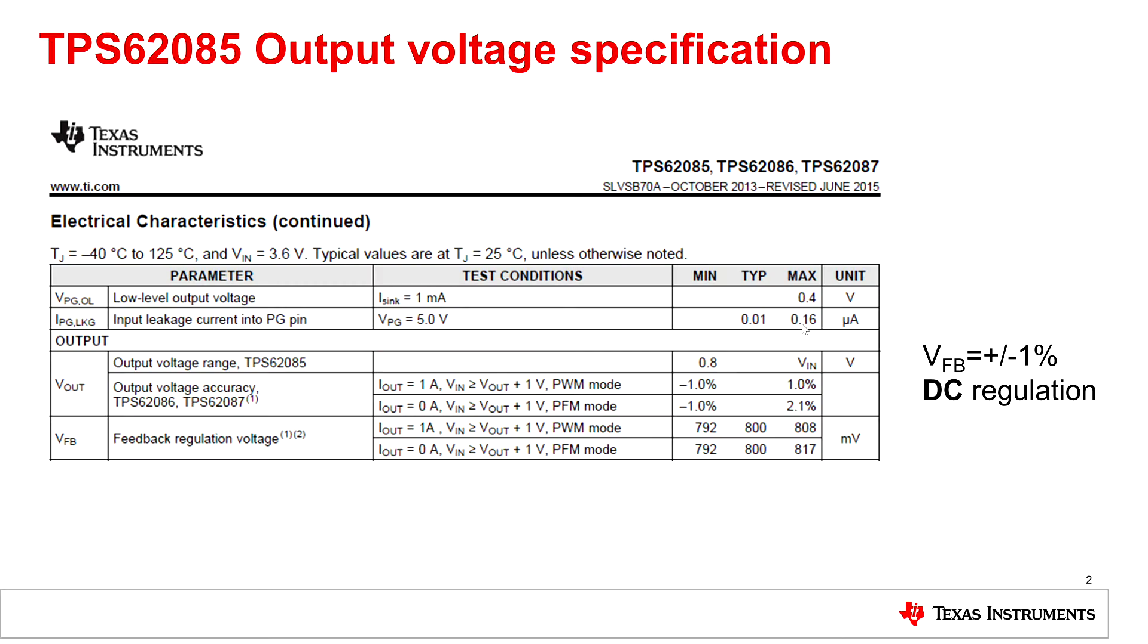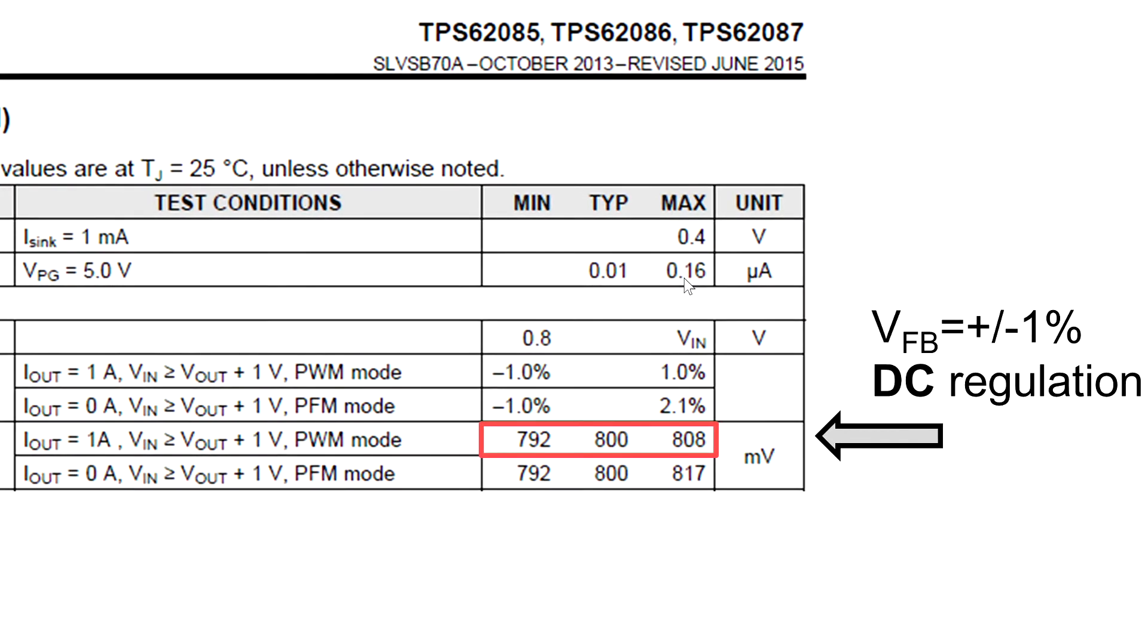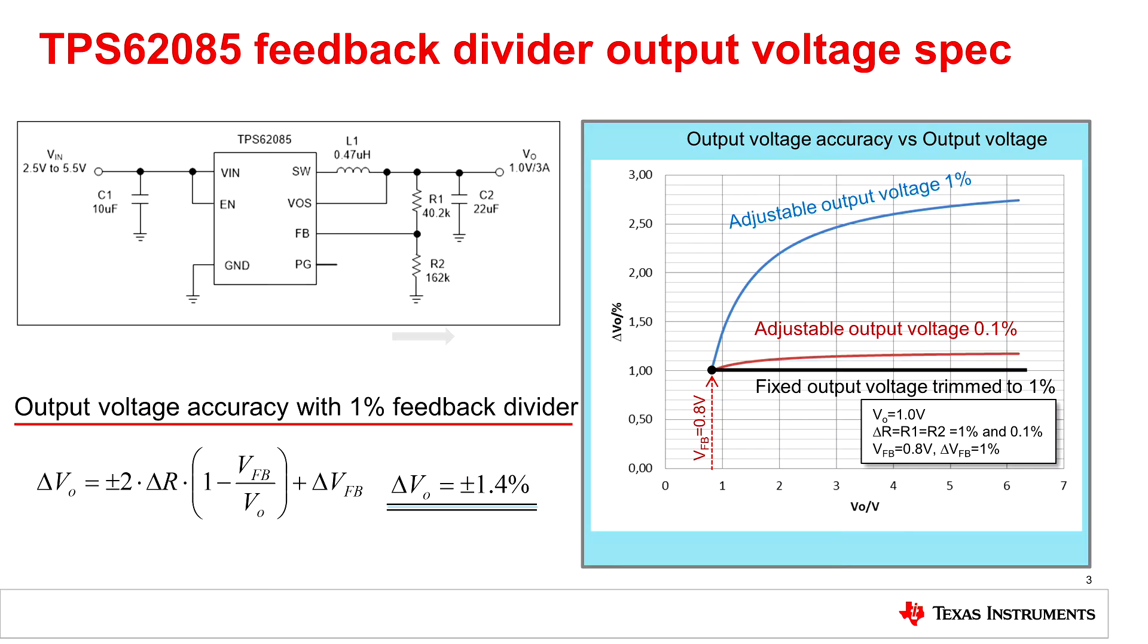Now we want to calculate the DC output voltage accuracy and the TPS62085 has a feedback regulation voltage of 800mV ±1%. We use a converter with an adjustable output so the output voltage accuracy depends on the feedback divider accuracy.